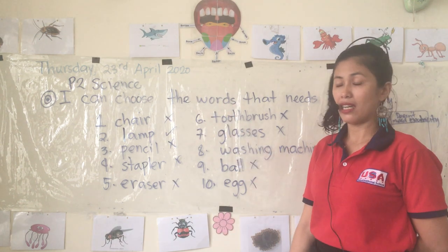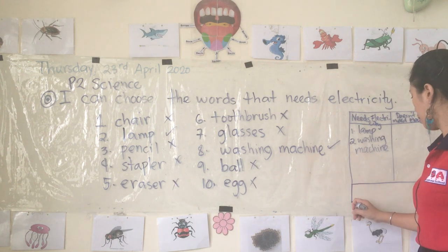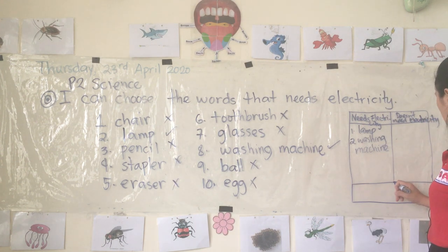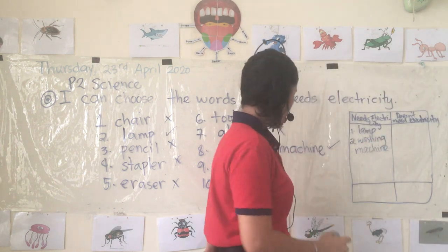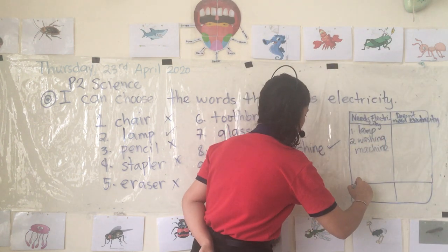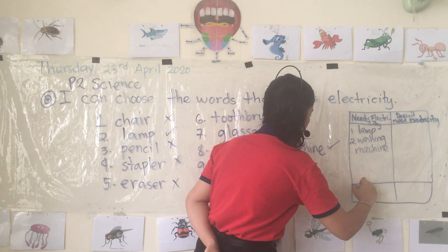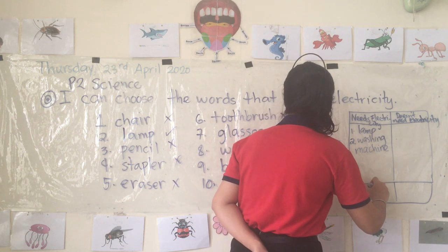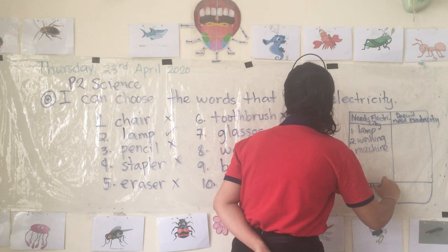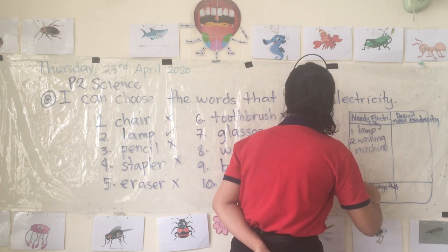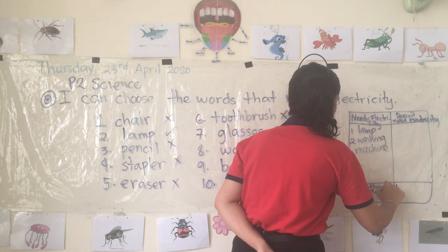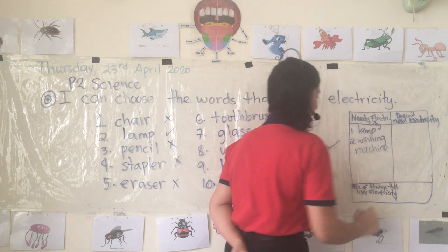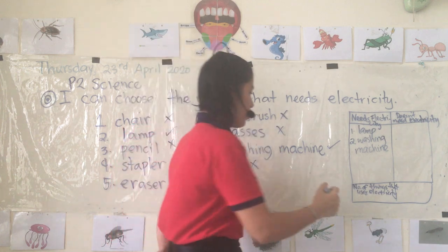So how many of these ten words need electricity? I'll put the number of things that use or need electricity — how many? Two, right? Two.